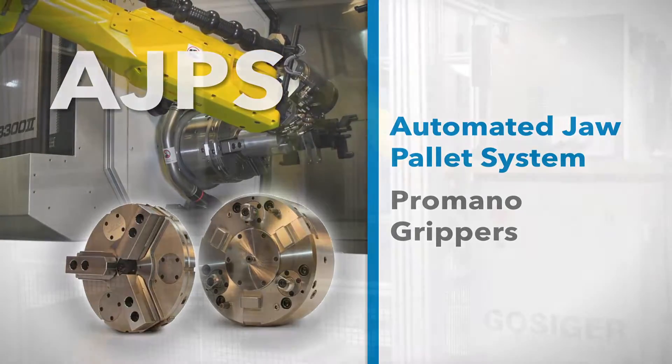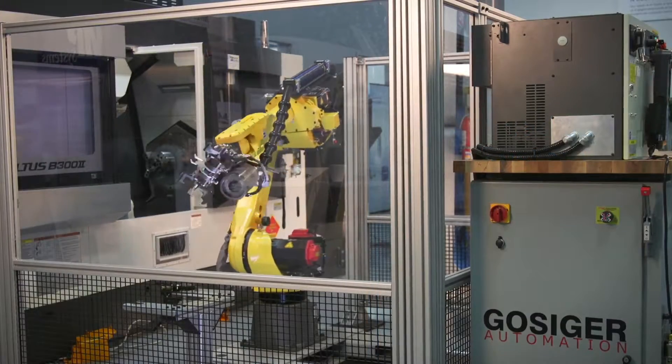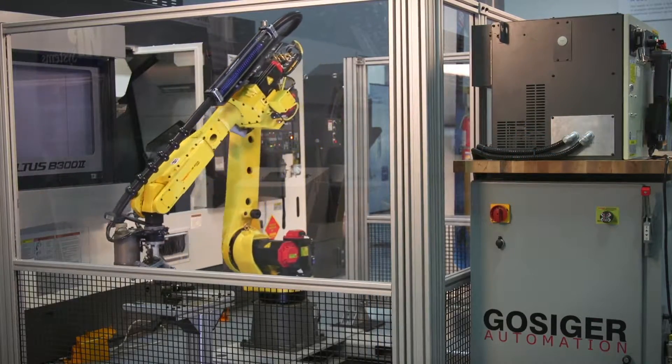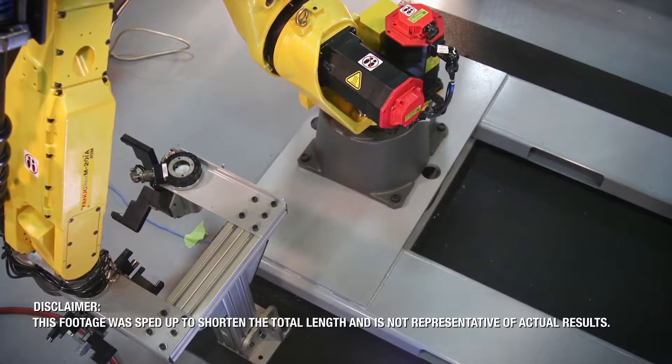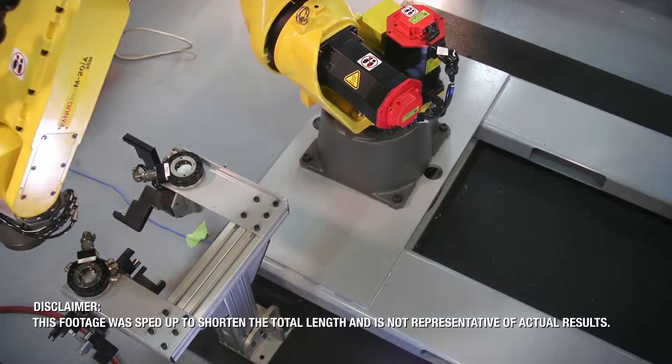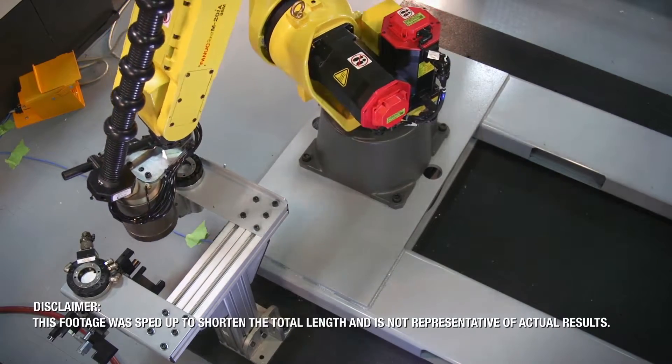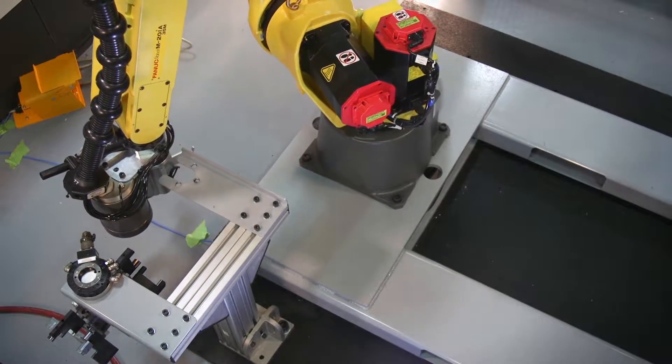The Kitagawa automated draw pallet system in conjunction with quick-change capable Kitagawa ProMono Grippers provides seamless flexibility in a robot-tended machining environment by allowing the cell to run in many different parts in low volumes consecutively, congruently, and unattended.